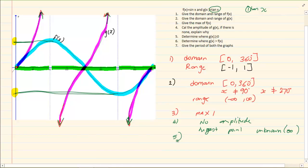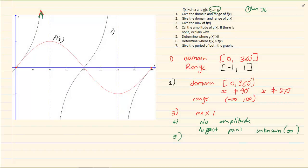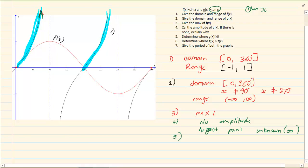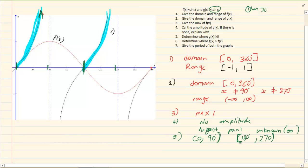Number 5 asks: determine where g of x is greater than 0. G of x refers to the y axis, so you want the y values to be positive. The graph is positive in two regions. The x values for the first region run from 0 to 90 — square bracket at 0, round bracket at 90 because it is an asymptote. The second region runs from 180 to 270 — square bracket at 180, round bracket at 270 because it is also an asymptote.